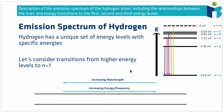Emission spectra are created when excited electrons move from higher energy levels to lower energy levels, like the transitions shown here in different colors. In doing so, they release photons of specific energies according to the size of each transition. If we collect the photons associated with every possible transition from a higher energy level to a lower one, that makes up our entire emission spectrum.